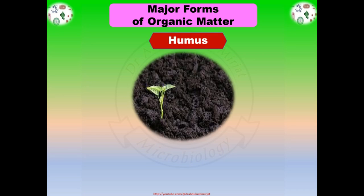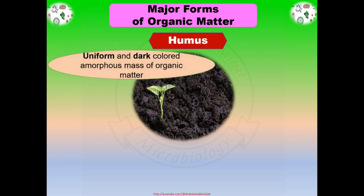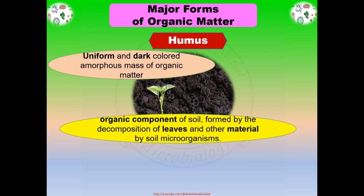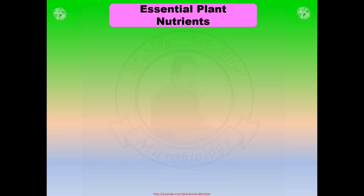Humus is a uniform and dark-colored amorphous mass of organic matter. It is an organic component of soil formed by the complete decomposition of leaves and other materials by the soil microorganisms. Humus serves as the source of energy and essential plant nutrients. There are at least 16 essential elements for plant growth. Plants must have these types of nutrients to perform various physiological functions.